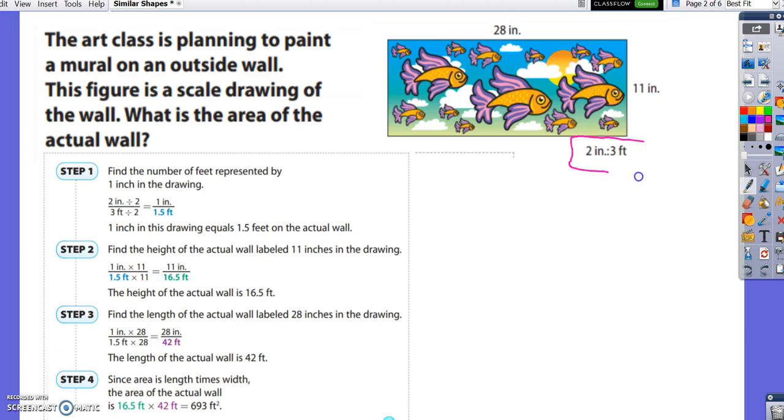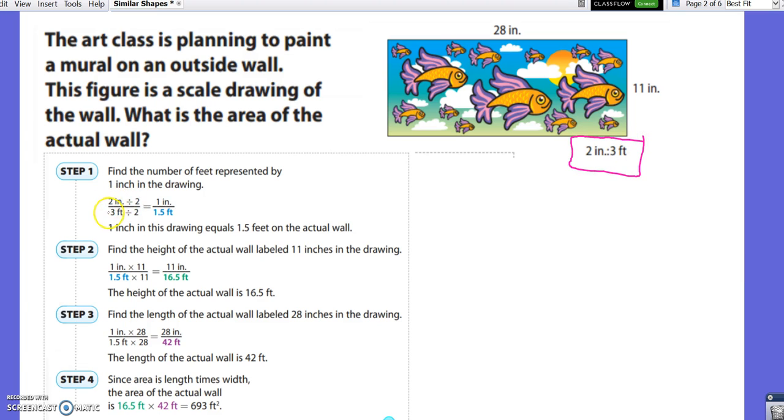When you look here, you can see that we have two inches over three feet. We're going to divide, two inches divided by two gives us one inch, and three feet divided by two gives us one and a half feet. So this is going to be our scale factor.